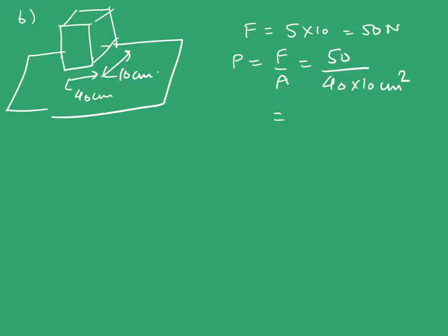The pressure will be force upon area, which is 50/(40 × 10) cm². Again converting centimeter square to meter square, I get 50 × 10⁴/400 pascals, which equals 12.5 × 100 = 1250 pascals.